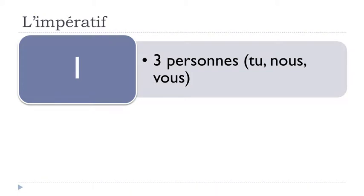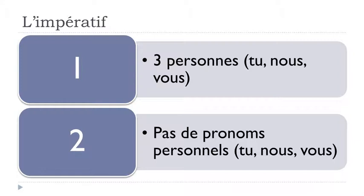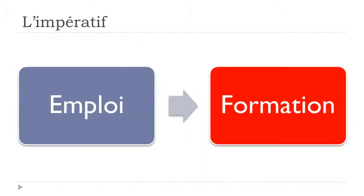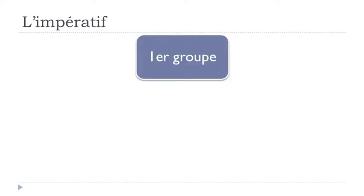Two important things to remember about the imperatif. First, we've got only three persons: tu, nous, and vous. The imperatif doesn't exist for je, il, or ils. Second, you won't use the pronom personnel — so you don't write tu, nous, or vous before the verb. You just use the verb form directly.